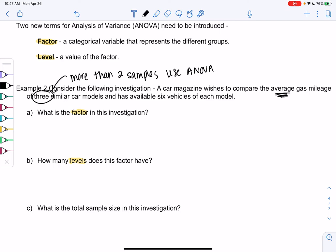So what's the factor? The factor is the different categories that represents the different groups. In this case, it would be the three different car models. So the car models are my factor, they're categories. A model of a car is a word and not a number. How many levels do we have? That's the three. So our factor is car model and there's three levels.